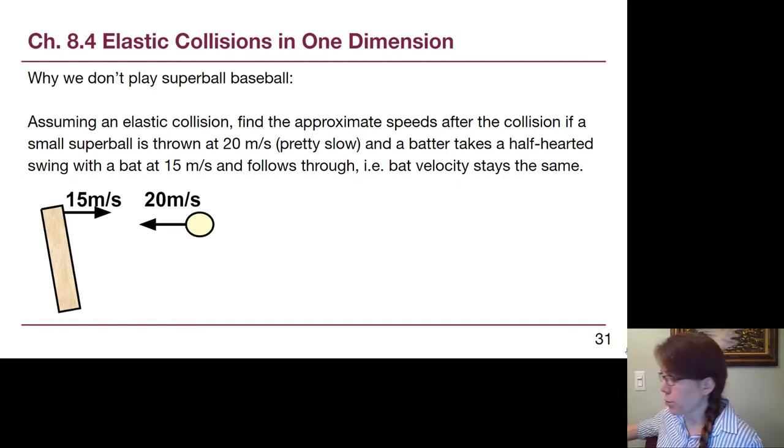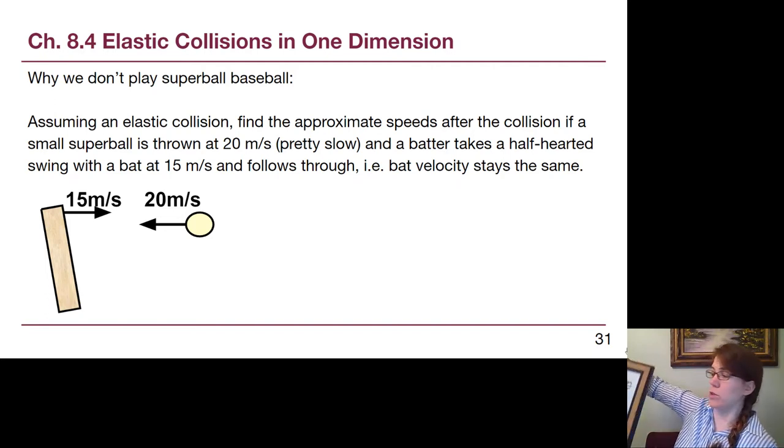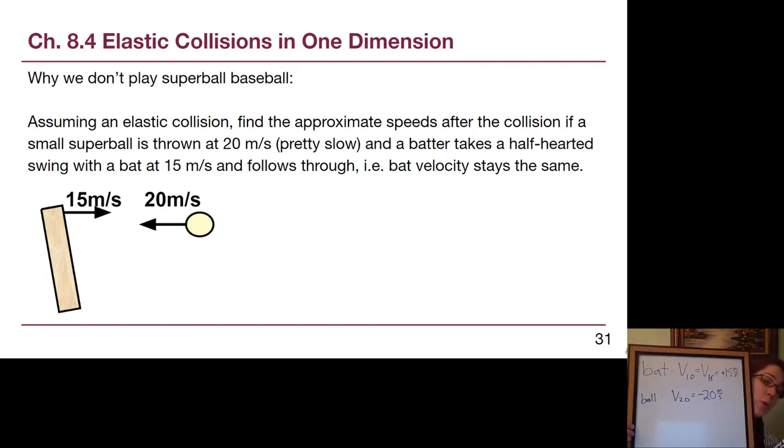So let's go through this same kind of situation with our equation here. Of what would happen if, two key things, if the batter follows through. So for the bat, v1 initial is equal to v1 final and both of those are going to be equal to positive 15 meters per second. It's moving to the right. And for the ball, the initial speed of the ball is negative 20 meters per second because it is moving to the left. So far we have this.